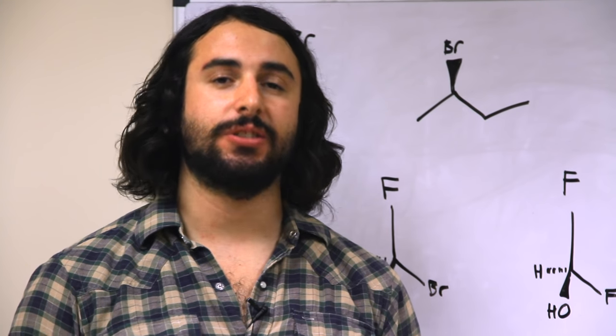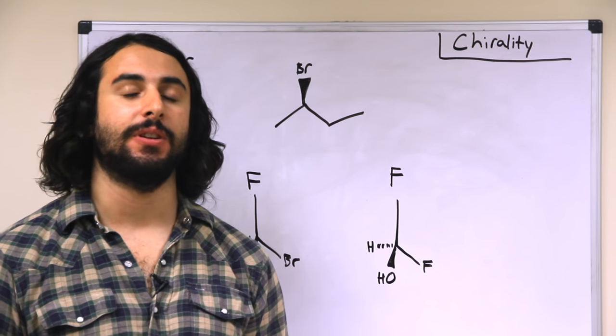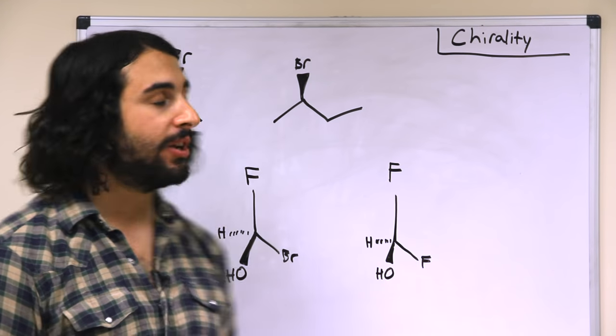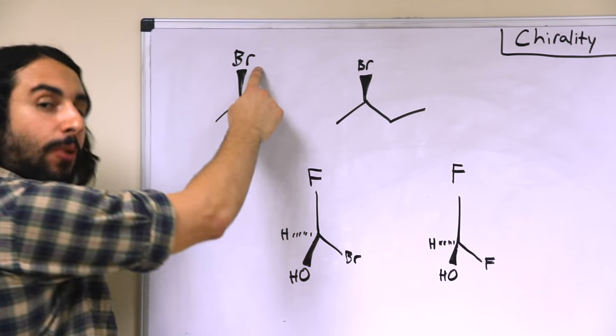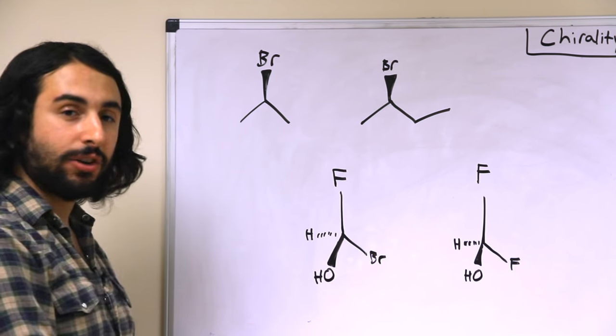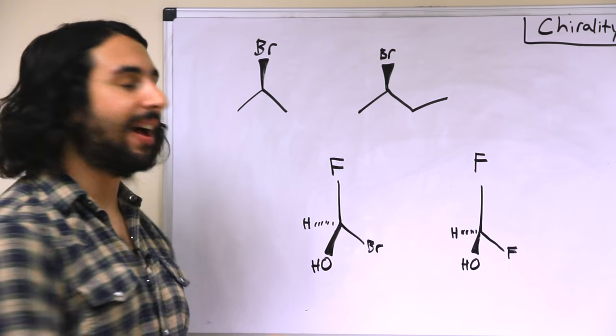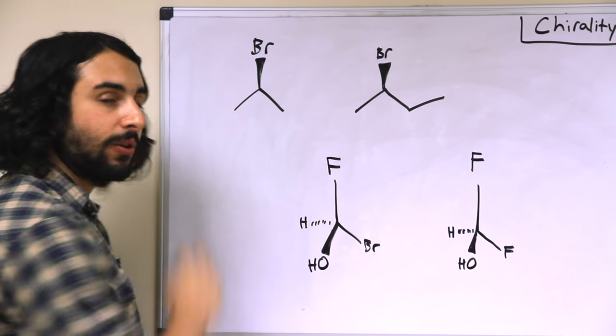So molecules that have an enantiomer display a quality called chirality. This is something that we would typically assign to a carbon that has four different substituents projecting from it. So for example, on the top, this carbon atom has a bromine atom, the implied hydrogen, and two identical methyl groups. So we would not regard this as chiral because it has two identical methyl groups.